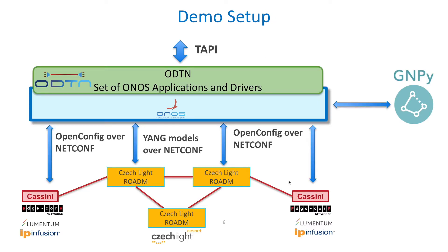This is what the topology and software deployment looks like. There is ONOS deployed with the ODTN applications to take into account the optical elements, communicating via REST to GMPY which is deployed as a Docker container. It controls a network comprised of two Cassini devices at the two ends of the line — two transponders with Lumentum ACO pluggable transceiver 200G cards with IP Infusion OCNOS software that expose the OpenConfig API towards ONOS. In the middle between the two transponders there is a set of CheckLight ROADM devices controlled by an open YANG model over NETCONF.